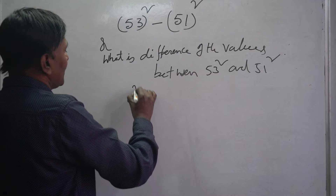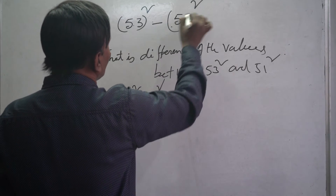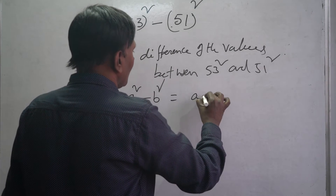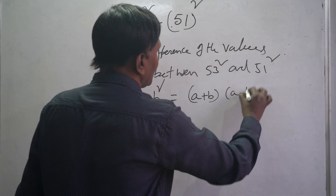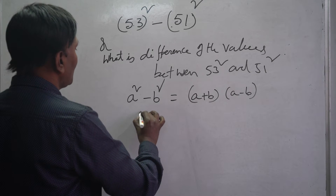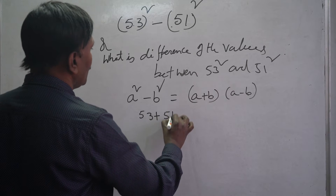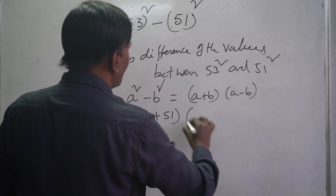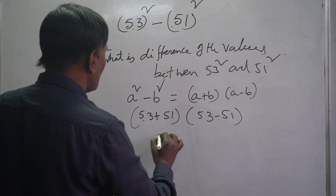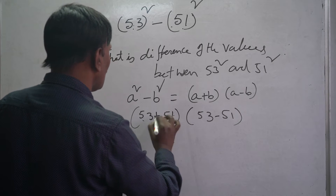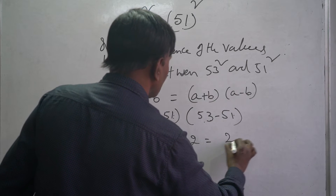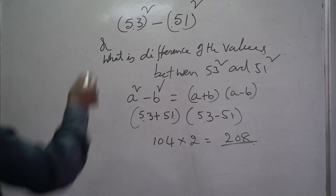This is in the form of a square minus b square. We know that a square minus b square equals a plus b into a minus b. So here, a is 53 and b is 51. We calculate 53 plus 51 which equals 104, and 53 minus 51 which equals 2. So 104 into 2 is 208.